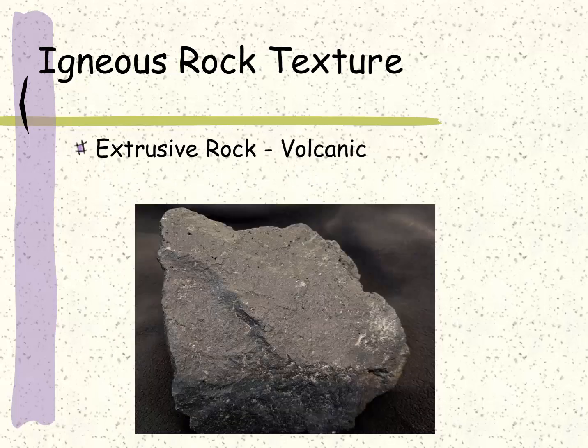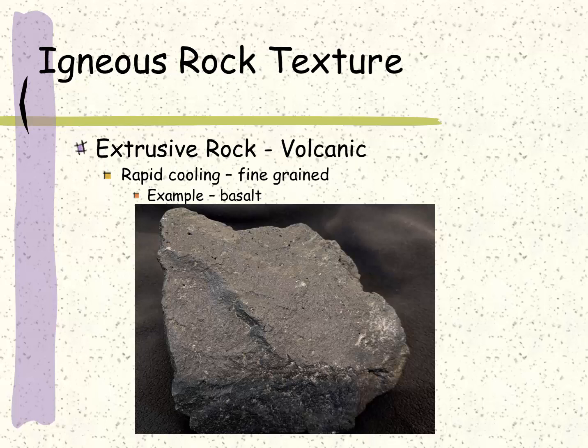On the other hand, extrusive or volcanic rock has a much finer grain texture. This is fairly rapid cooling because it cools up on the surface of the earth. The most common example of an extrusive rock is basalt, such as this hand sample. Both of these hand samples are approximately fist-sized. You can see it's very fine-grained without the developed crystals like we can see on the granite.